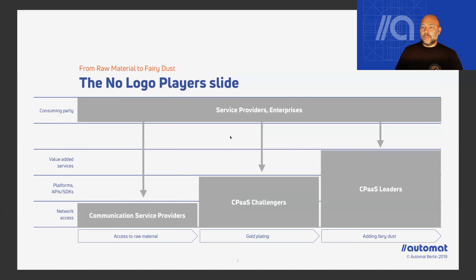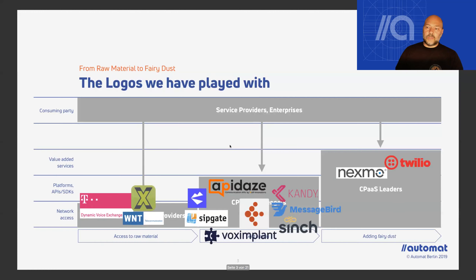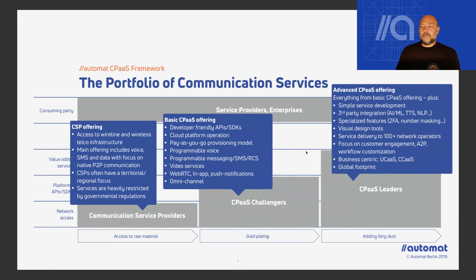The consuming party is everyone who would like to use programmable telco communication assets to provide services. The telco providers are a long-established bunch of companies, and they sit on the most valuable resource — access to networks. This is what we call raw material: SIP trunks, number trunks, and SMS trunks. They provide them in a very classical way, and they are usually bound to their footprint — sometimes just a country.